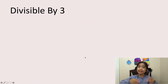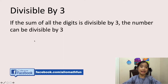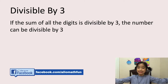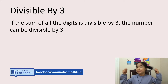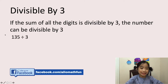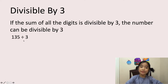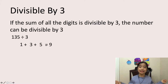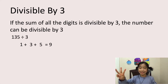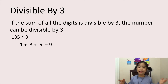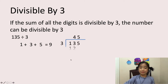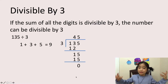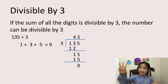Now let's look at divisible by 3. The rule is, if the sum of all the digits is divisible by 3, the number can be divisible by 3. Let's look at my example: 135 divided by 3. Let's add up all the numbers. 1 plus 3 plus 5 equals 9. So 9 is divisible by 3, so 135 is divisible by 3. I can prove it with my long division. 135 divided by 3 equals 45.